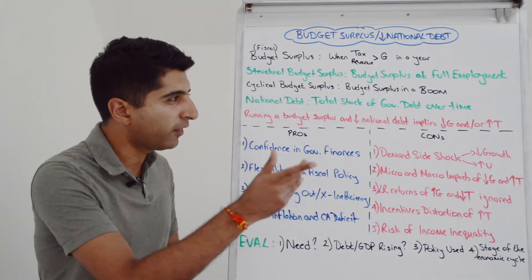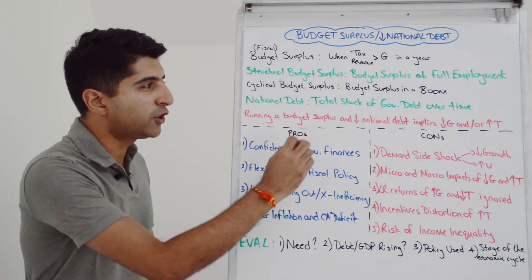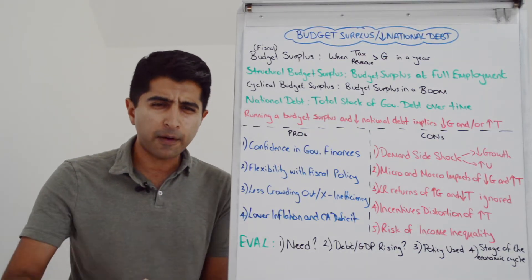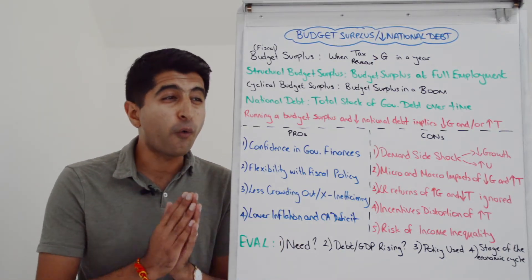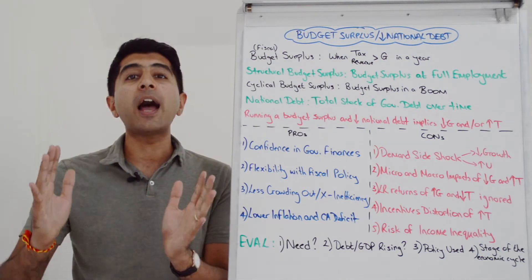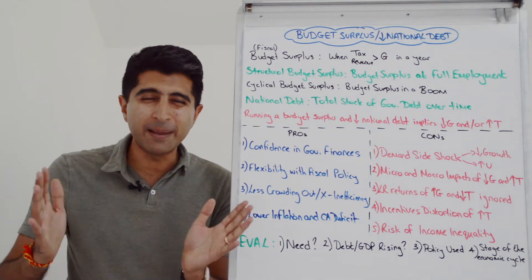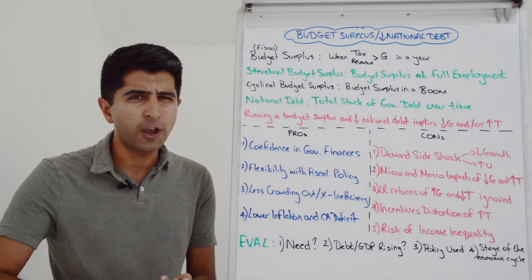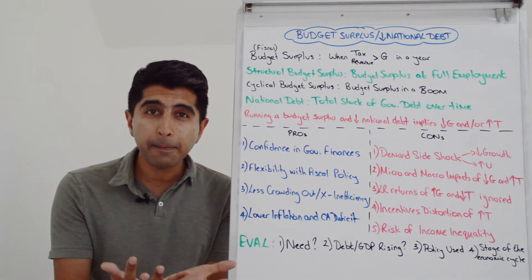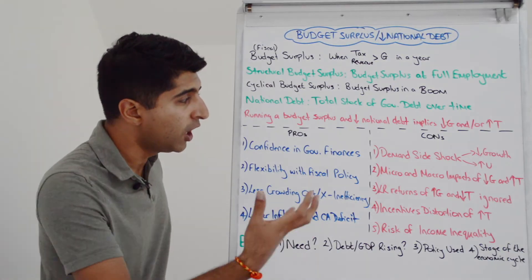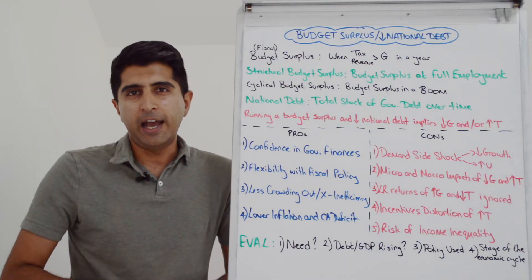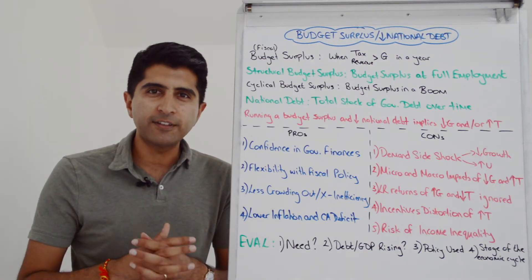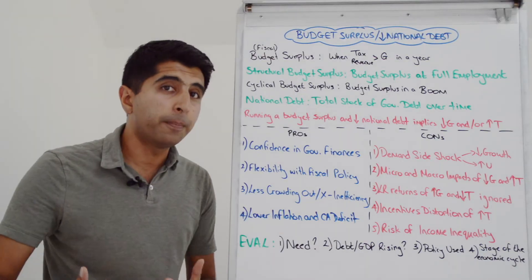Let's now evaluate whether the pros or cons are likely to outweigh the other. First, we can question whether it's necessary to use these policies at all. If government finances are already in a very bad way — operating outside fiscal rules, with really high budget deficits and very high national debt — then absolutely there is a need, and the pros are likely outweighing the cons. But if government finances are already relatively stable and sustainable, the cons could easily outweigh the pros.